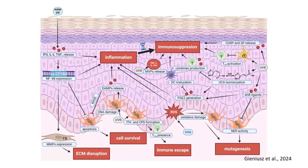UVB radiation causes the release of damage-associated molecular patterns, which amplify inflammatory signaling and promote apoptosis. UVB also induces the release of platelet-activating factors like lipids and interleukin-1-RA, suppressing normal immune responses. Cytokine production and dendritic cell maturation are disrupted while regulatory T-cells are activated, contributing to immune escape. Urocanic acid isomerization and AHR ligand activation further modulate the immune environment, allowing tumor cells to evade immune detection.